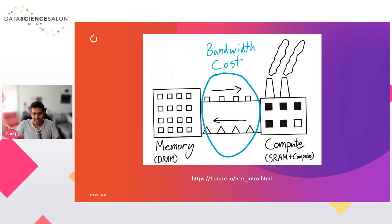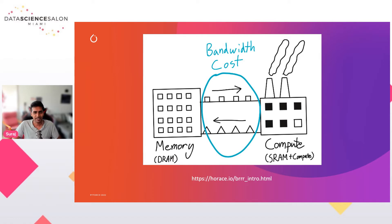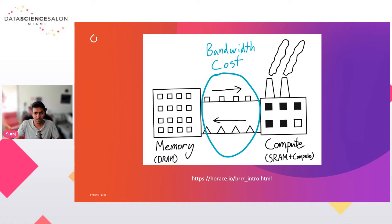Another way to understand this problem is via an analogy by my colleague Horace. It helps to think of compute as a factory that receives raw materials and operates on them. The raw materials are tensors, stored in a DRAM warehouse on the other end of the GPU. Your factory workers might be the best, most efficient people on the assembly line, but it doesn't mean much if the trucks transporting the raw materials are too slow. Realistically, upgrading the GPU bus width is not a plausible solution, so we work with what we have.